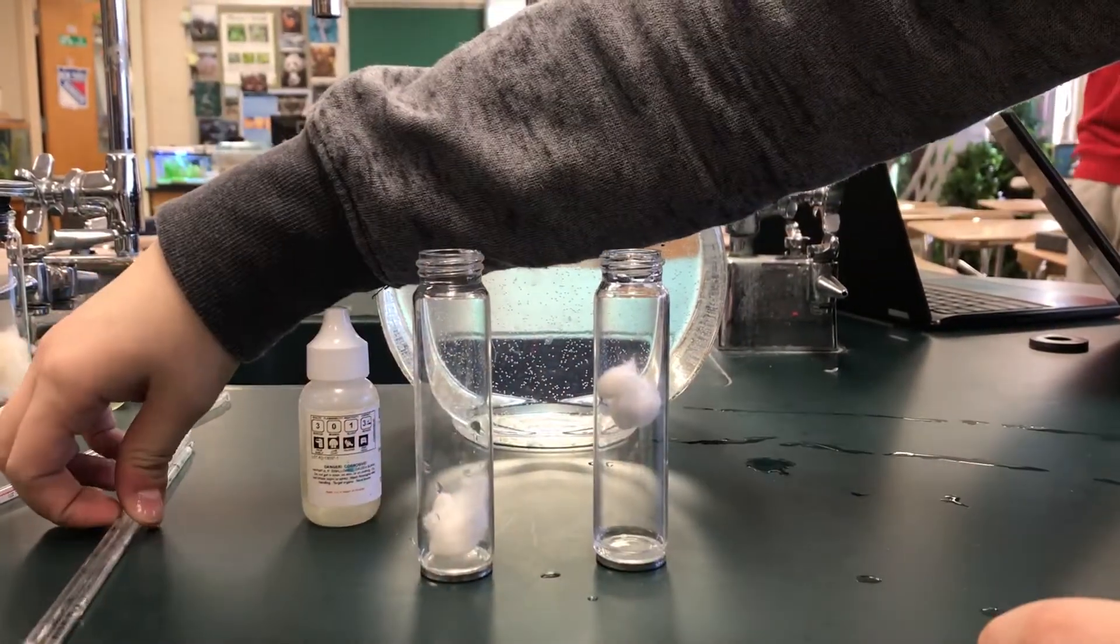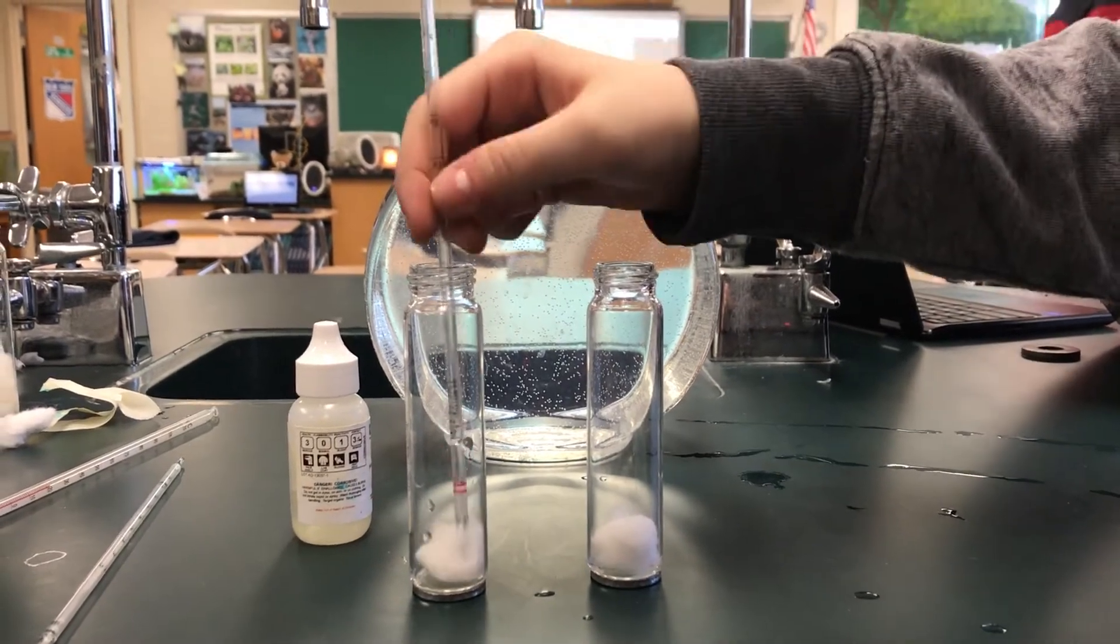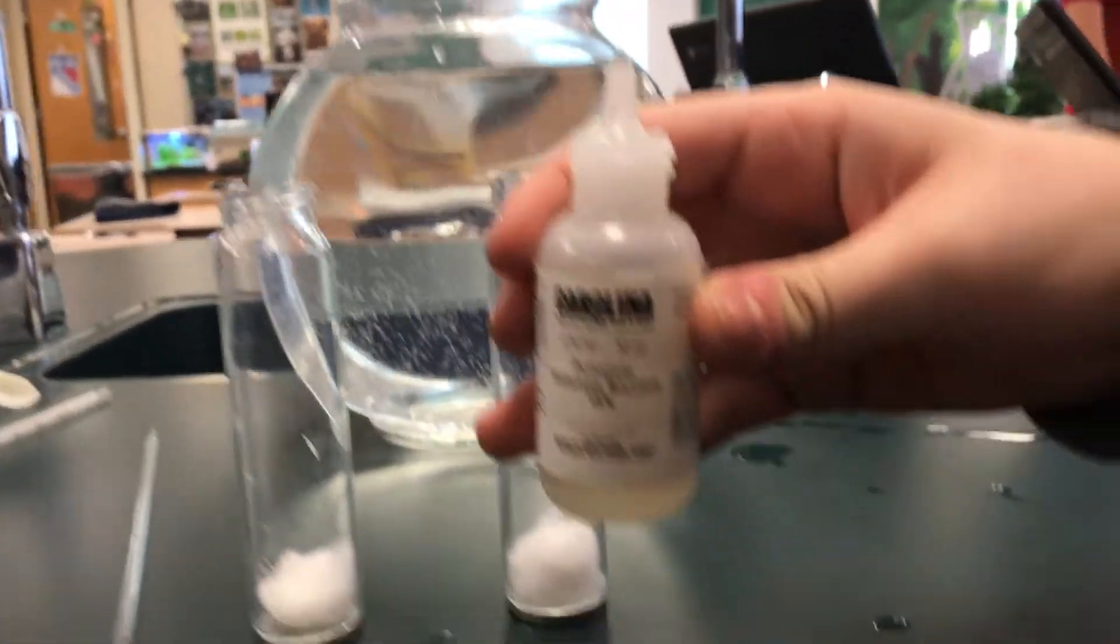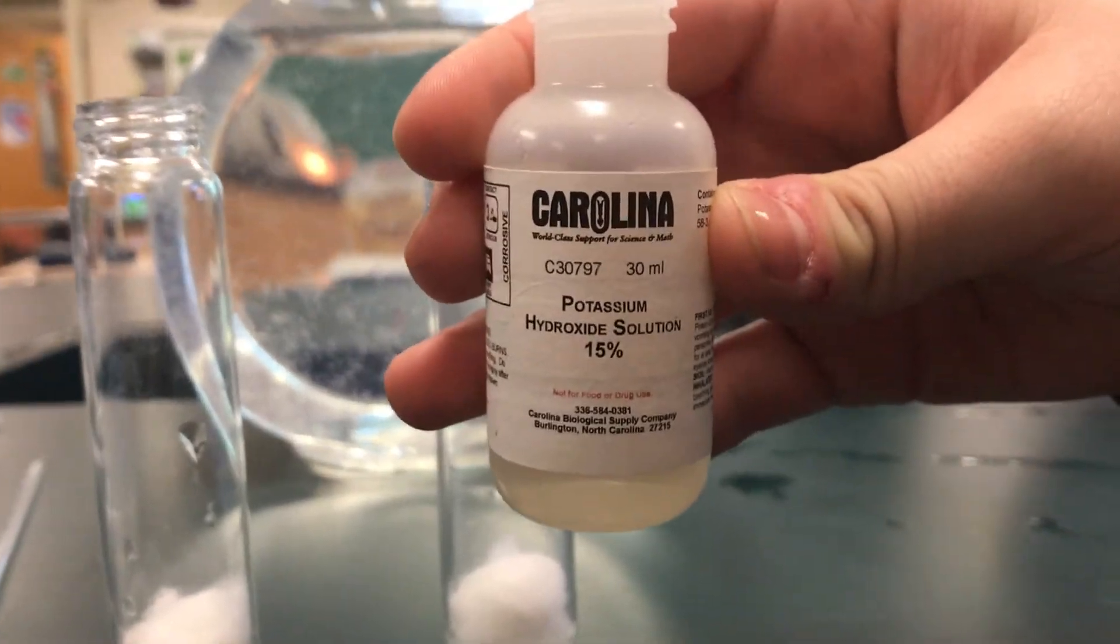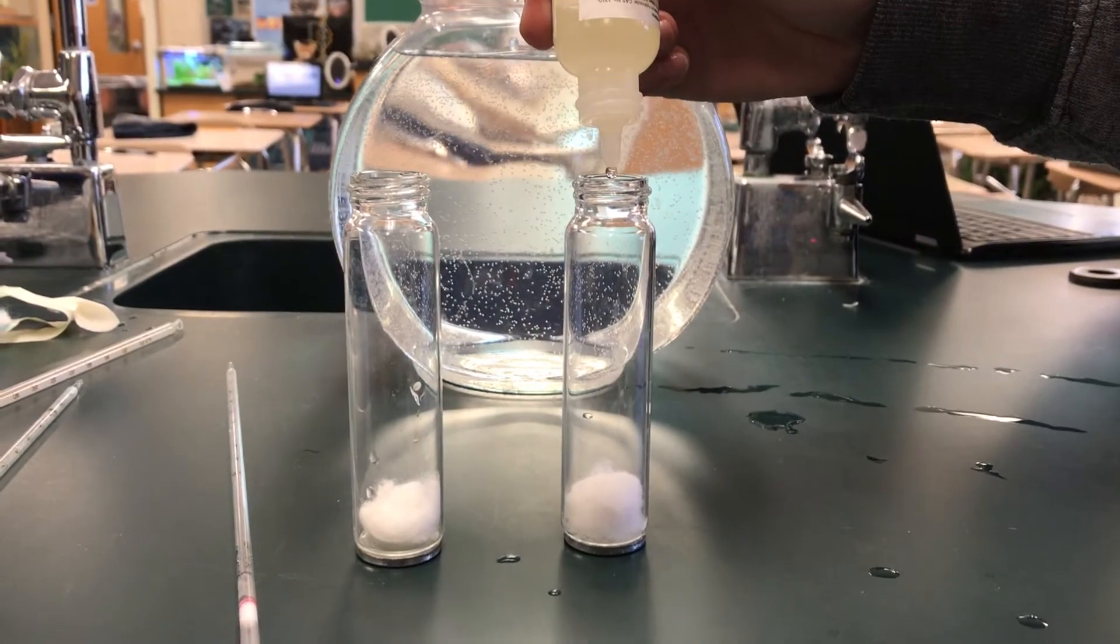Starting off this experiment, place the absorbent cotton balls into the bottom of the chambers. Now, taking the potassium hydroxide, you'll want to put equal amounts in each chamber, and that should be around 10 to 15 drops in each.